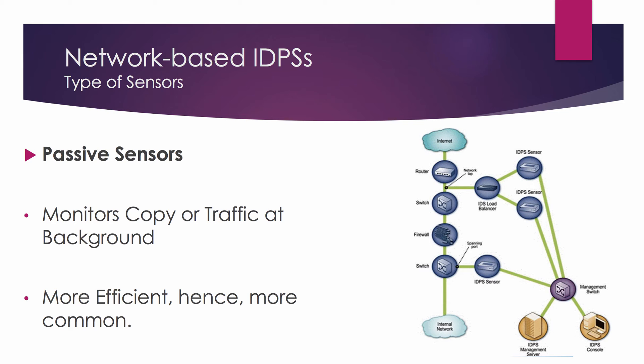A passive sensor is deployed so that it monitors a copy of the actual network traffic. No traffic actually passes through the sensor. Passive sensors are typically deployed so that they can monitor key network locations, such as divisions between networks and key network segments.